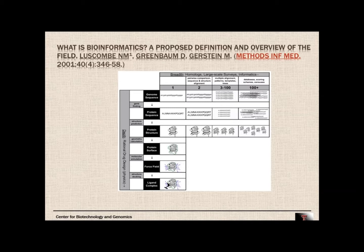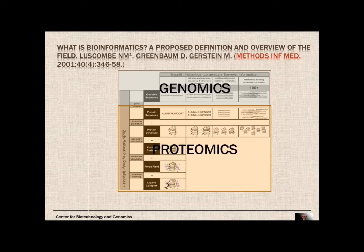Drug design is the design of molecules that interact with a protein to affect a certain function — for example, reducing pain, as aspirin does. Because there is a force field and interactability associated with a protein's surface, you can model a ligand complex, a protein-protein complex, or a protein-DNA complex. This brings genomics and proteomics together, and while the drug design application may seem narrow, it is a pretty good illustration of bioinformatics.